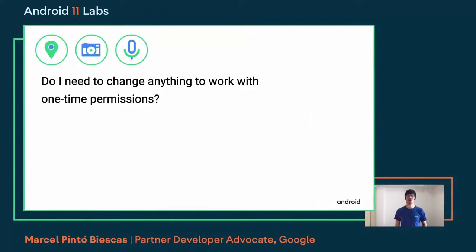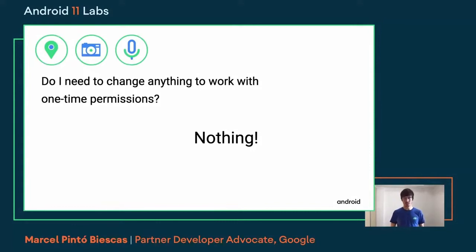You might have an important question: do I need to change anything to work with one-time permission? The answer is nothing. The one-time permission gives you access to those APIs while the user is using the app, and only revokes it after the user stops using the app — similar behavior to what could happen before.